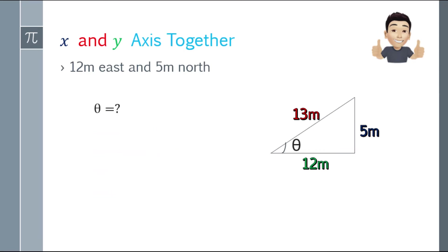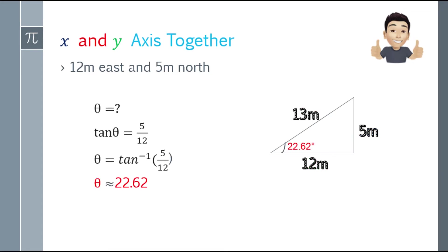We're not done yet — we need to find the angle. To find the angle, we use: tangent theta = opposite over adjacent. That will be 5 over 12. So theta equals the arc tangent of 5 over 12, and the answer will be 22.62 degrees.